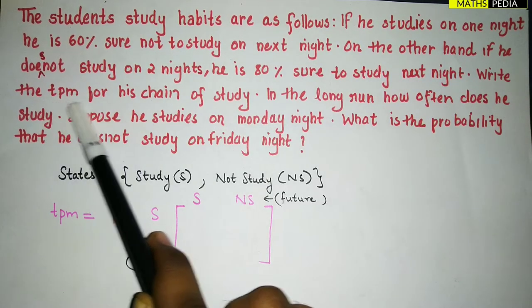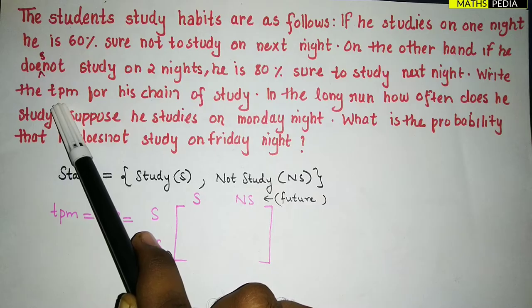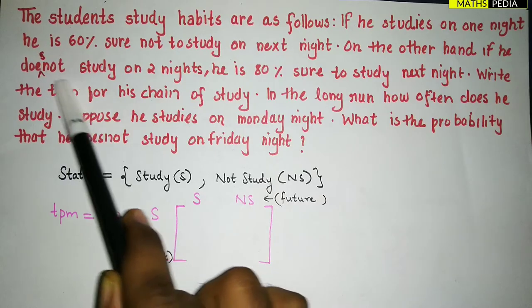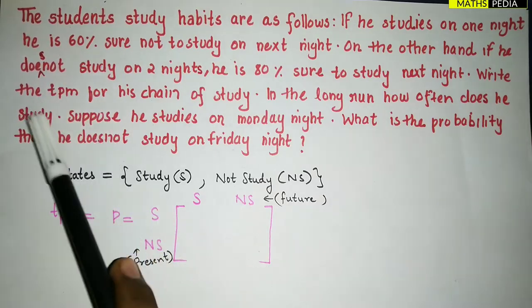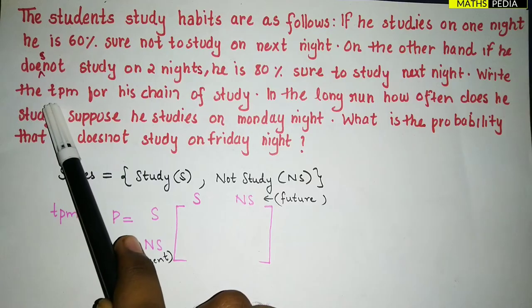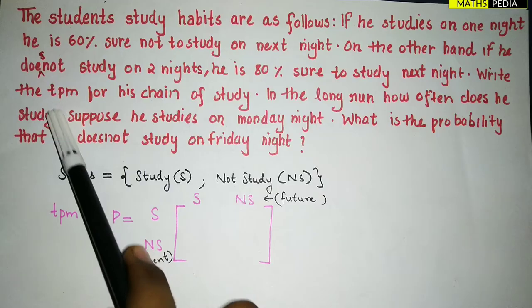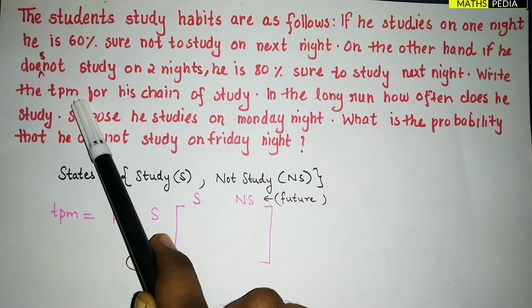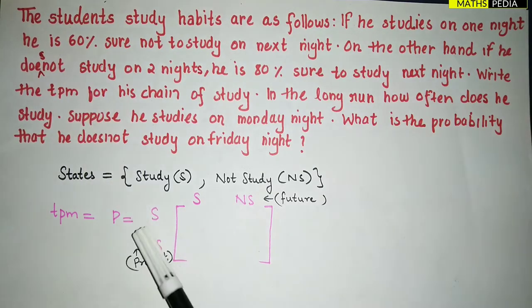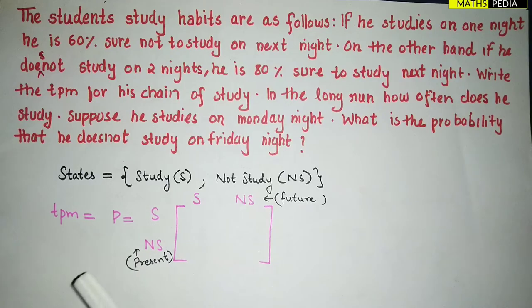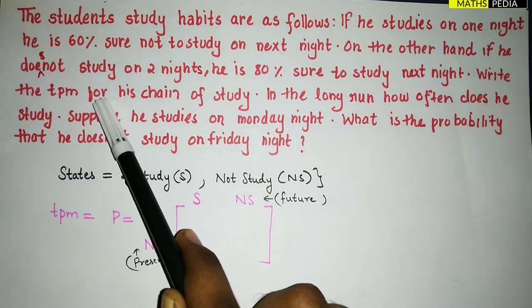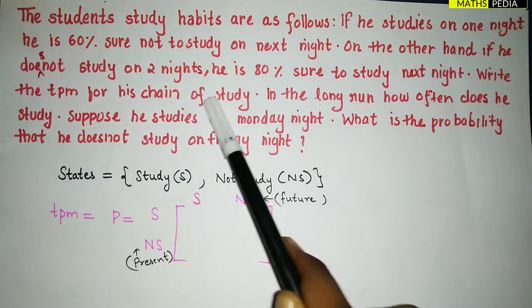TPM stands for Transitional Probability Matrix — T for Transitional, P for Probability, M for Matrix. This will be denoted by capital P.